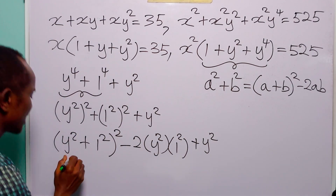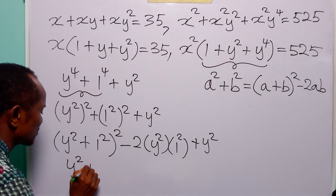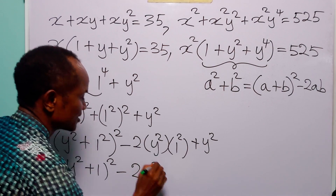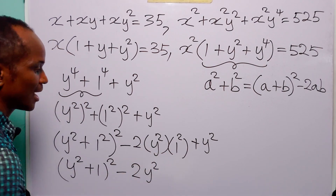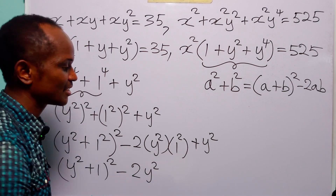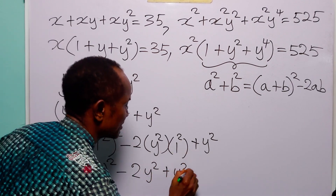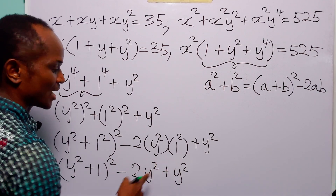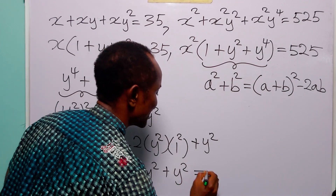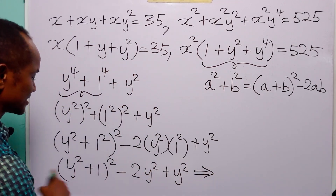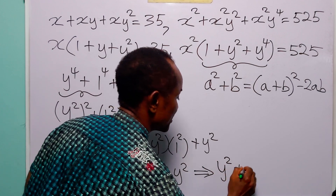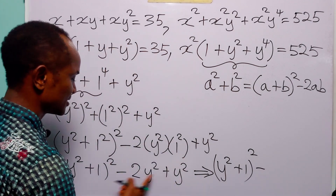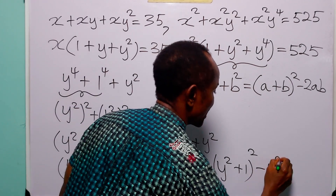Now let us simplify this. We have y squared plus 1, both squared, minus 2 times y squared. You know that 1 squared is 1, and anything multiplied by 1 remains the same. And we have plus y squared. Now look at these two: minus 2y squared plus y squared is equal to minus y squared.